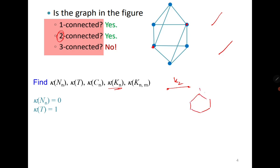If I draw C6, you can see that it does not have a cut vertex, but if I delete vertices 1 and 4, the remaining graph is {2, 3} and {5, 6}. So for all cycles, if I delete two vertices, the graph becomes disconnected. But if I delete fewer than two vertices, it is not disconnected, and therefore the vertex connectivity of a cycle is 2.